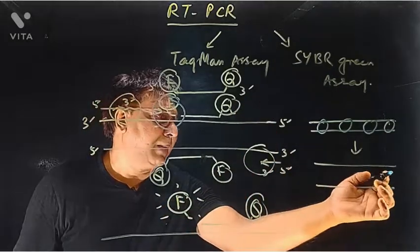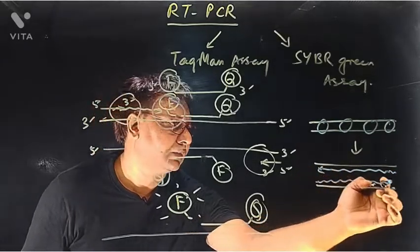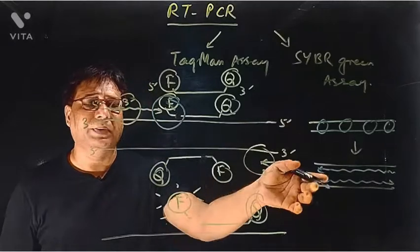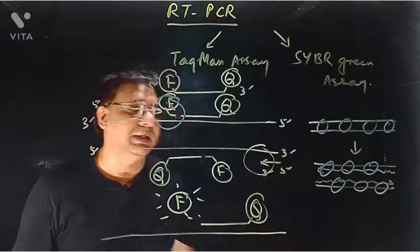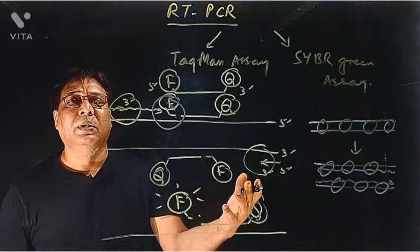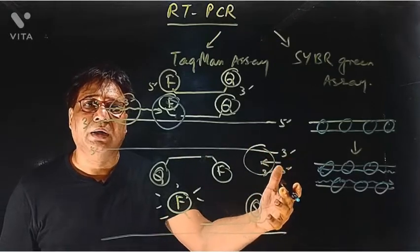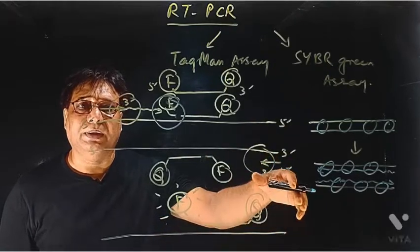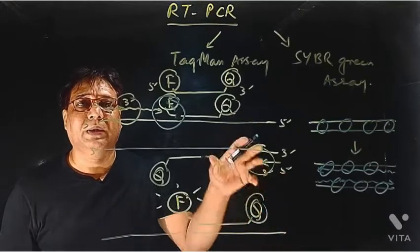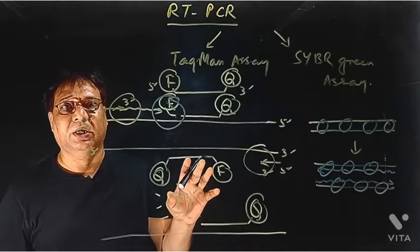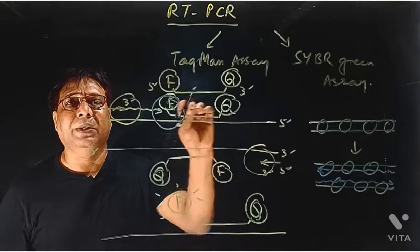When the primer binds and a new DNA is synthesized after one round of PCR, more SYBR Green will bind with this double-stranded DNA and more fluorescence will be emitted. At every round of PCR, the amount of DNA will be doubled and the fluorescence will also get doubled because more SYBR Green molecules will bind with the double-stranded DNA. It does not bind with single-stranded DNA, or it poorly binds with single-stranded DNA and the primer-template junction.